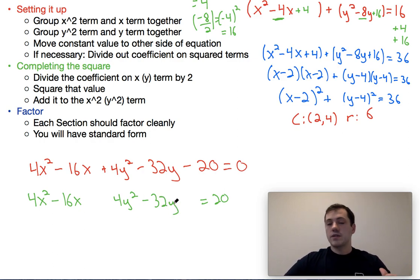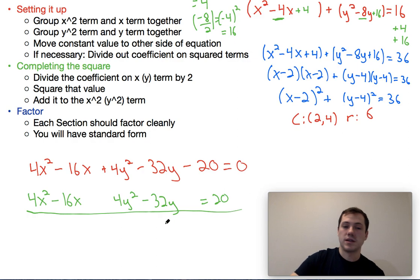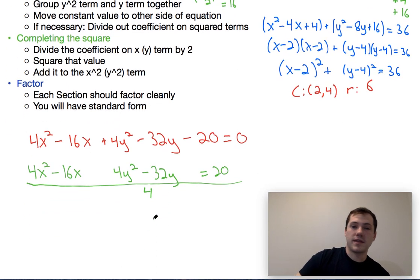Now, because there's a coefficient on the x squared and the y squared term, it is necessary here to divide both sides of the equation by whatever that coefficient is. In this case, that coefficient is 4, so I'm going to have to divide everything on both sides of the equation by 4. So what I'm going to end up with after I do that division is x squared minus 4x, y squared minus 8y equals 5.